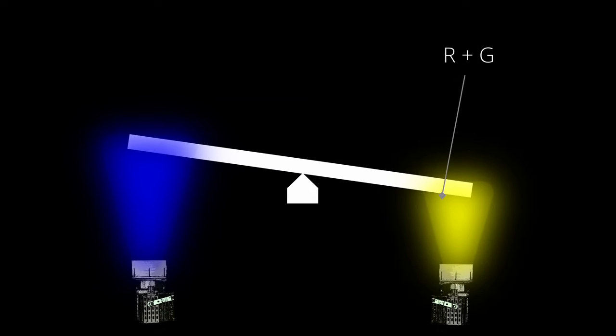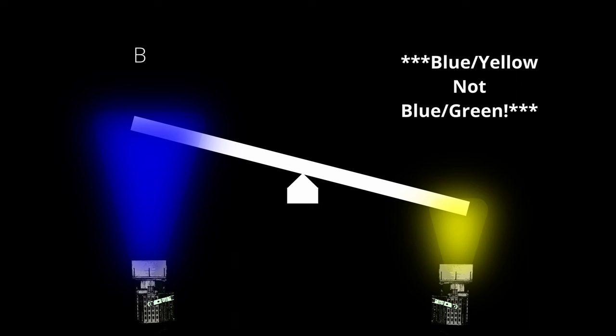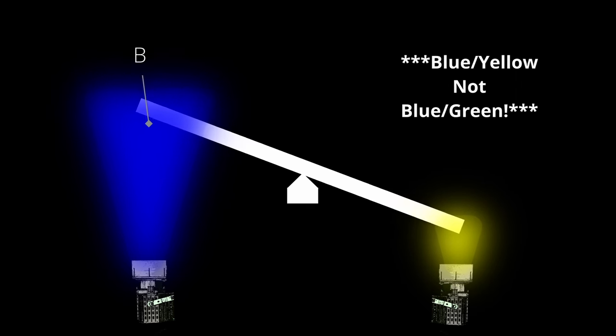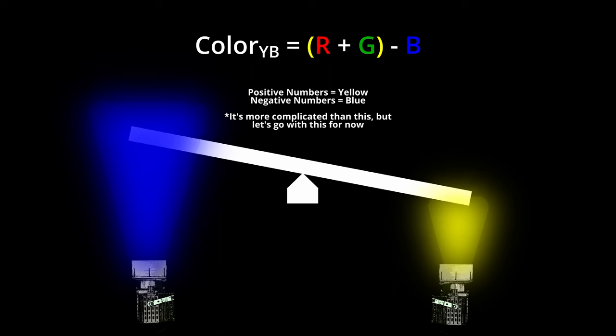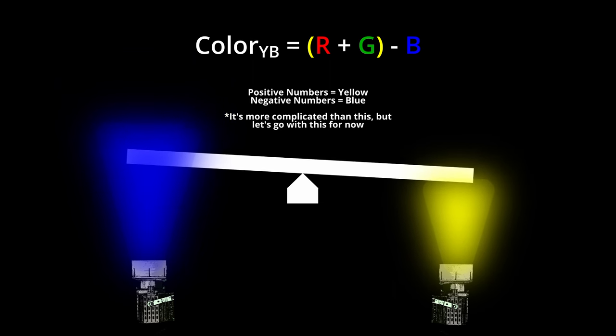Let's go back to the color channels. Remember how we talked about seesaws? Let's review the blue-green channel. When RNG cones are active and B cones are not active, your brain sees yellow. And the reverse is also true.